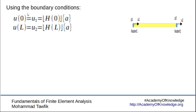Now we need to force the function to satisfy the boundary conditions we have. So what we have to do is substitute x equals 0 and then put u of x equals u1, and then also at x equal to L, u of x will be equal to u2.